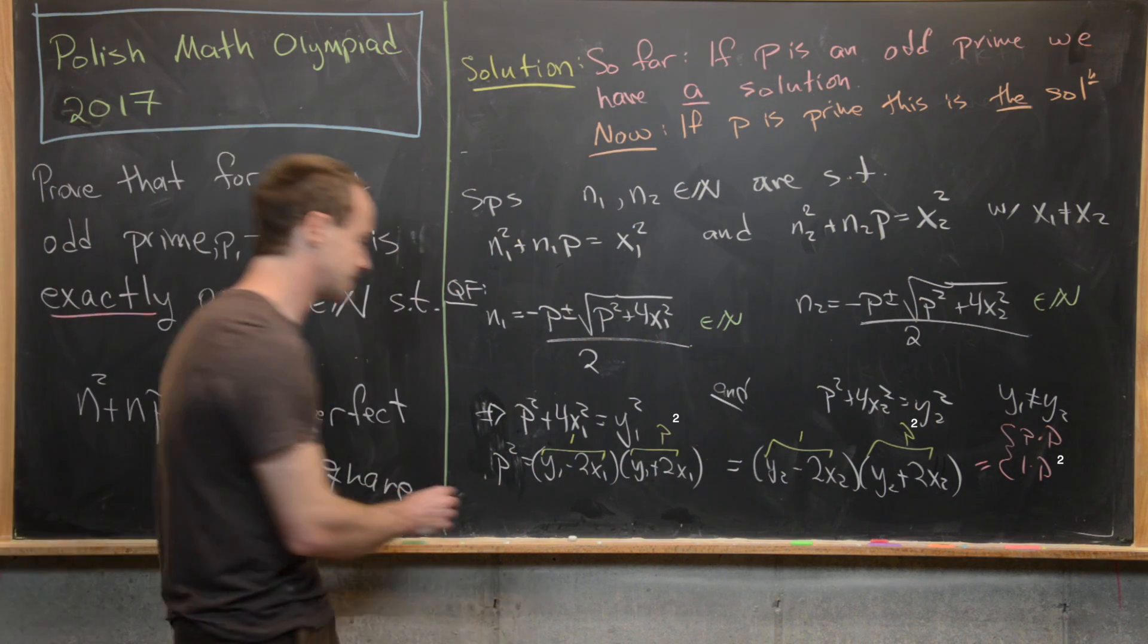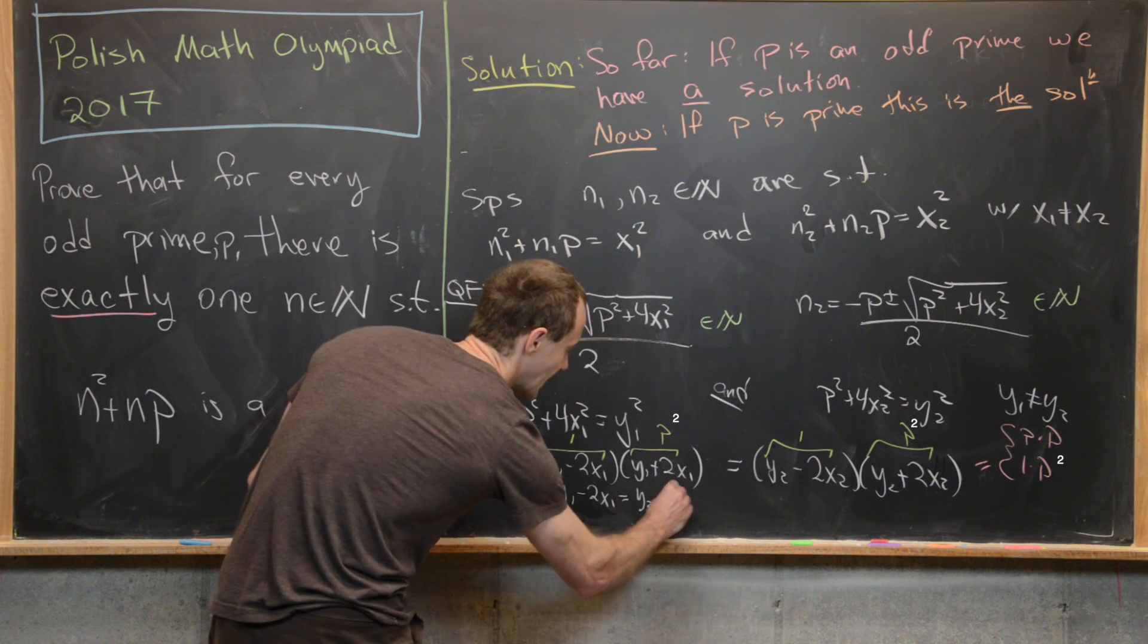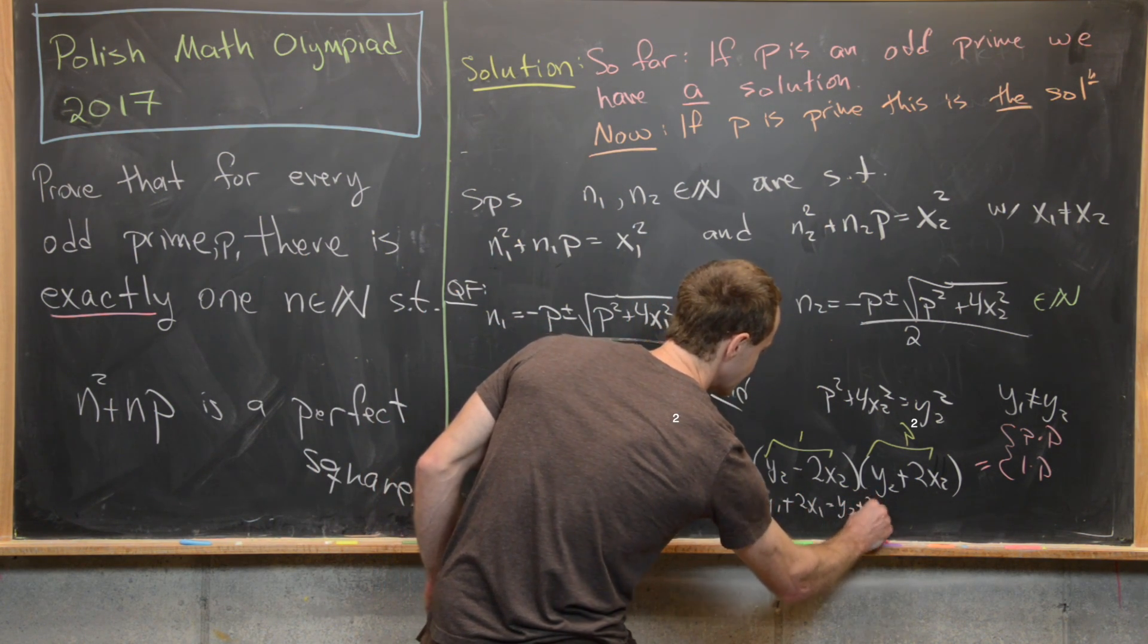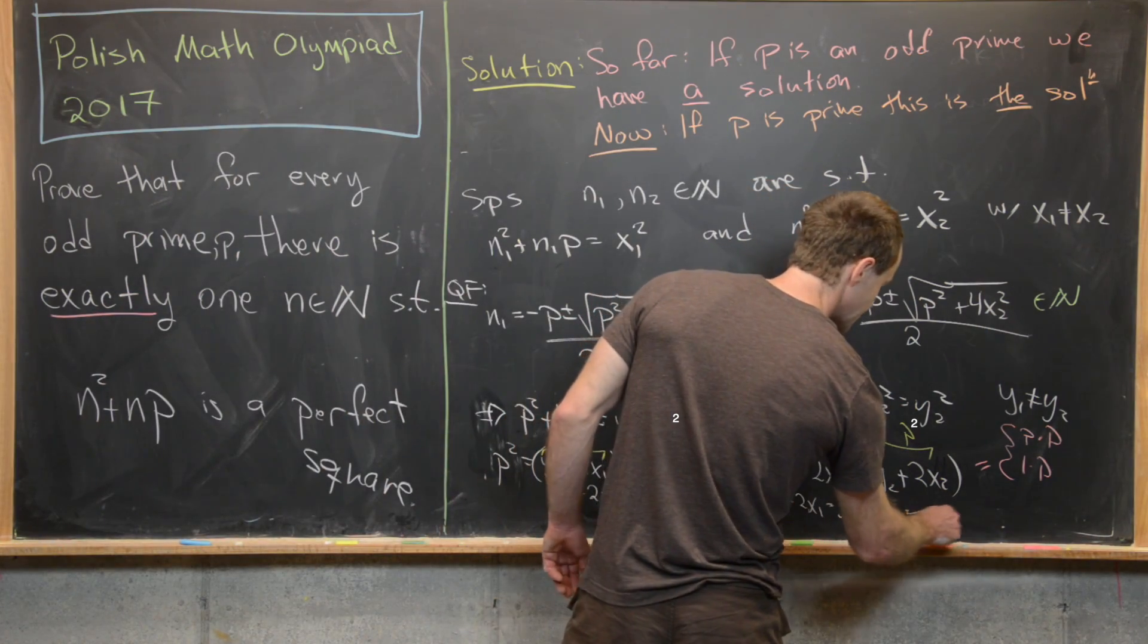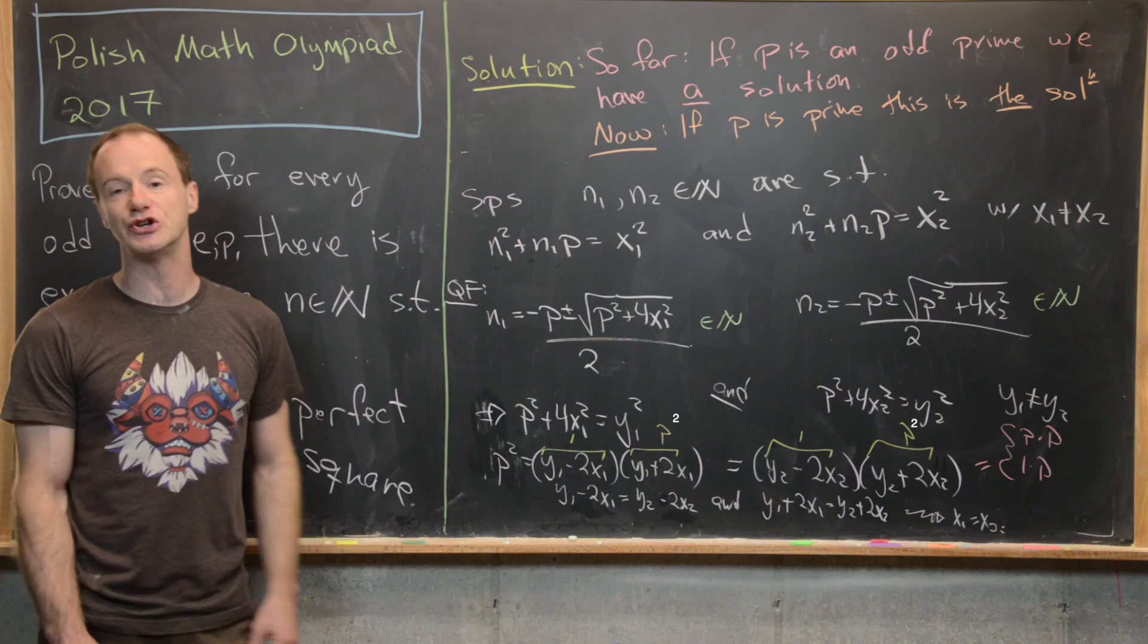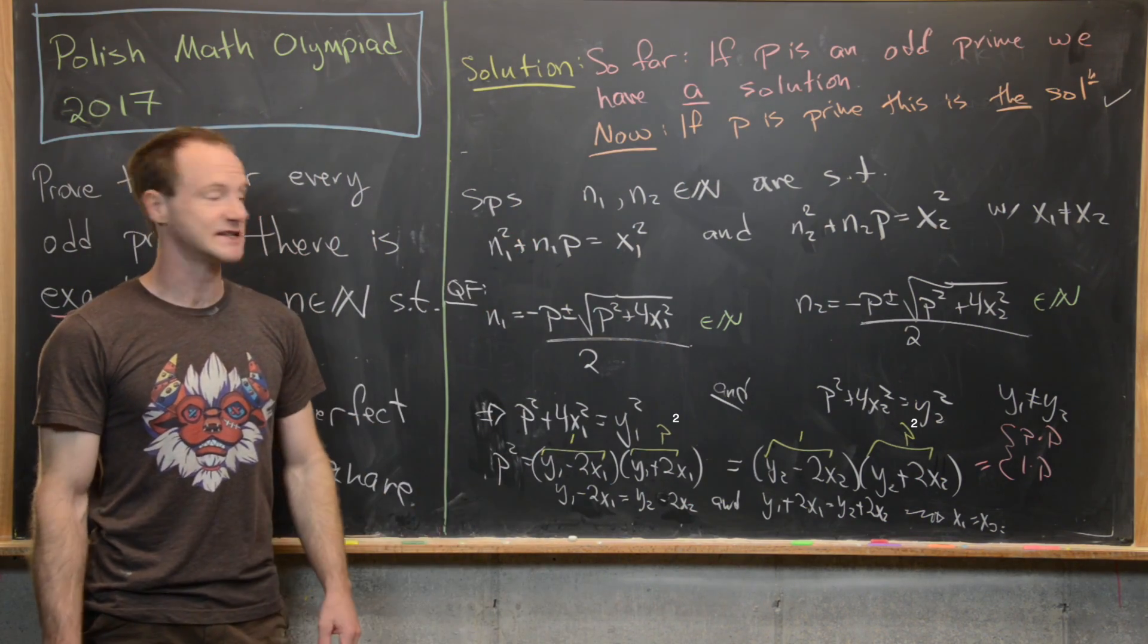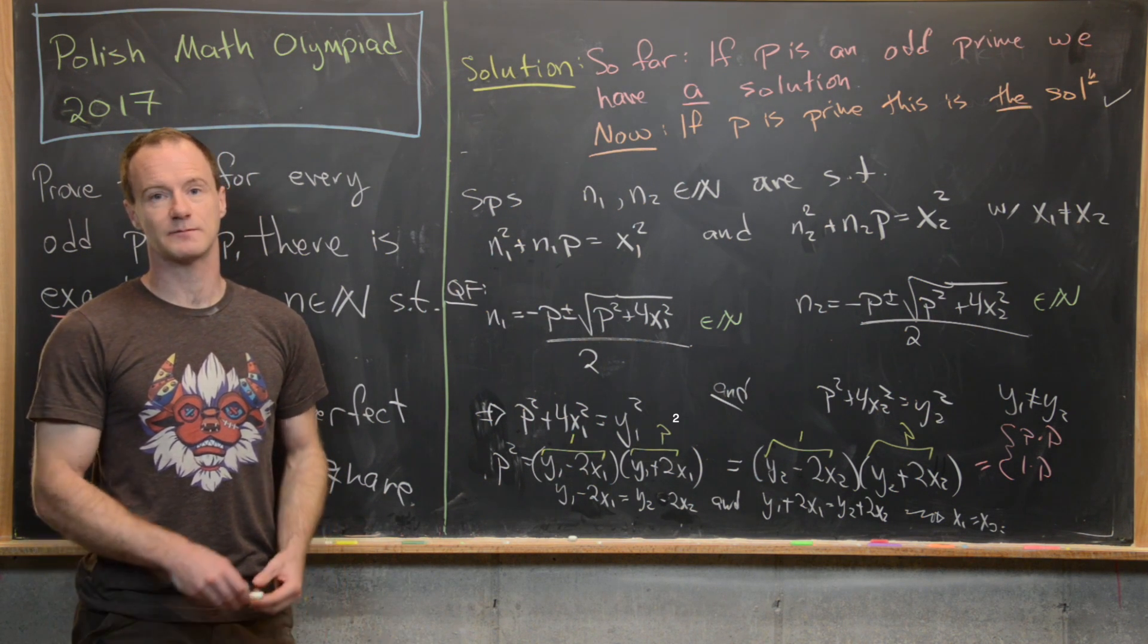So in other words, we have y one minus two x one equals y two minus two x two, and y one plus two x one equals y two plus two x two. But now solving this system of equations, we get to the point where x one equals x two, which contradicts this original assumption that we had two solutions. So now we have proven that if p is prime, this is the only solution. Because if we tried to get two solutions, we ended up with two of the same solution. And that's a good place to stop.